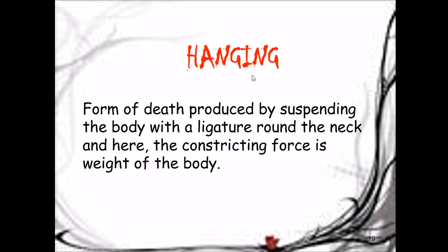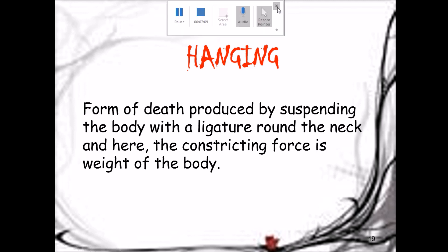The first specific type of asphyxia we will consider is hanging. Hanging is a form of death produced by suspending the body with a ligature around the neck, where the constricting force is the weight of the body. In the next lecture we will learn about hanging in detail. Thank you, please subscribe to Forensic Extract.